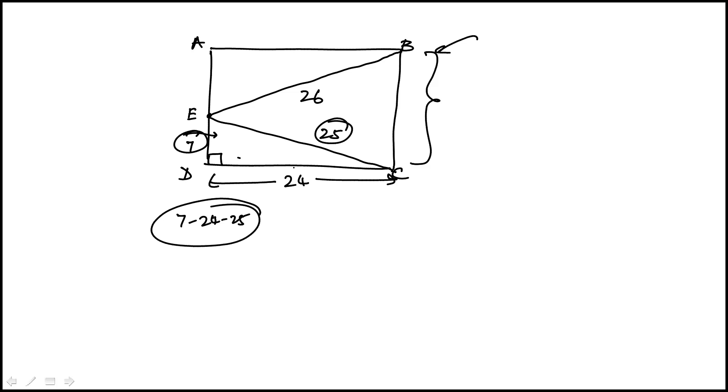Now if you don't recognize this you can just use the Pythagorean Theorem and say 7 squared plus DC squared is equal to 25 squared and you'll get DC to be 24.